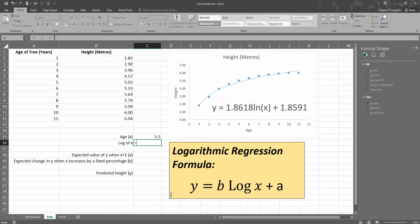Brackets, and I'm just going to click on cell C15 here, closing brackets, and that will give me the natural log of 5.5. And we can see that that value is 1.7.